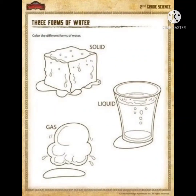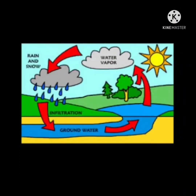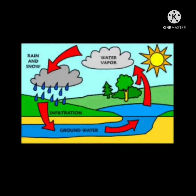Children, now we know that water has three forms. Water can also change from one form to another. In nature, these changes take place on their own — this is called the water cycle. Now let's learn about the water cycle in detail. There is water in lakes, rivers, seas, and oceans.